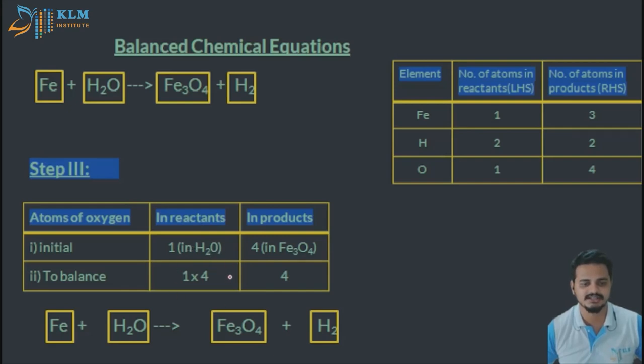What you have to do now is bring four oxygen in the reactant side. Where is oxygen in the reactant side? It is in the water molecule. So water molecule you can multiply by four. Now you can get perfectly balanced oxygen molecules, so there are four oxygen molecules on the left-hand side and four oxygen molecules on the right-hand side.